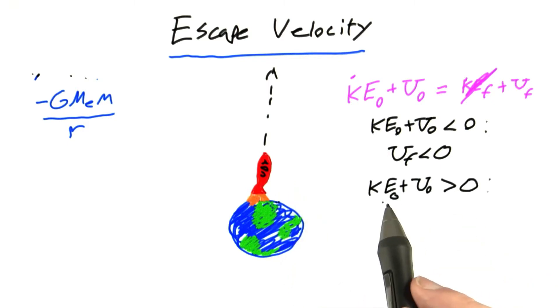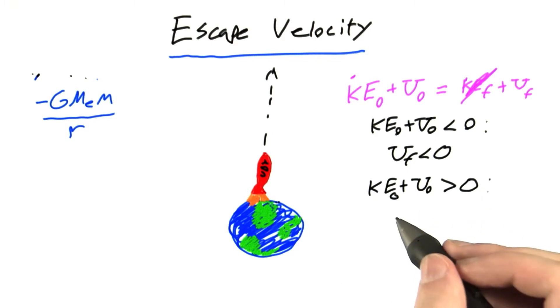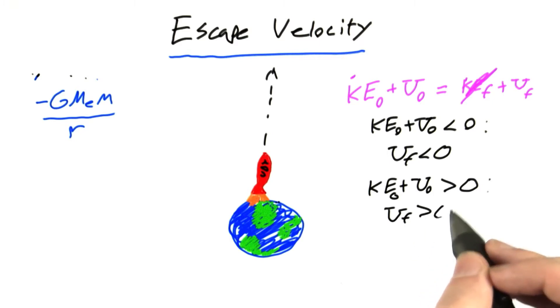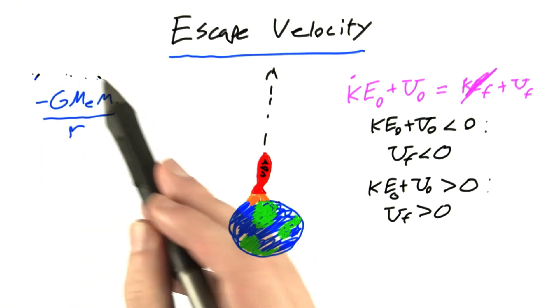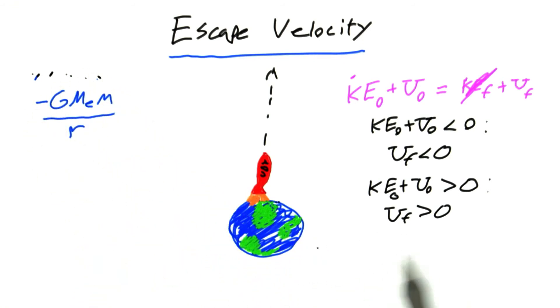Now what about the case where the original kinetic energy plus the original potential energy is greater than zero? Well then in this case, the final potential energy must also be greater than zero. But this poses a problem. Since this formula says that gravitational potential energy is always negative, we're in trouble. How can the final potential energy be greater than zero and less than zero at the same time? The solution is they can't be. So what went wrong?